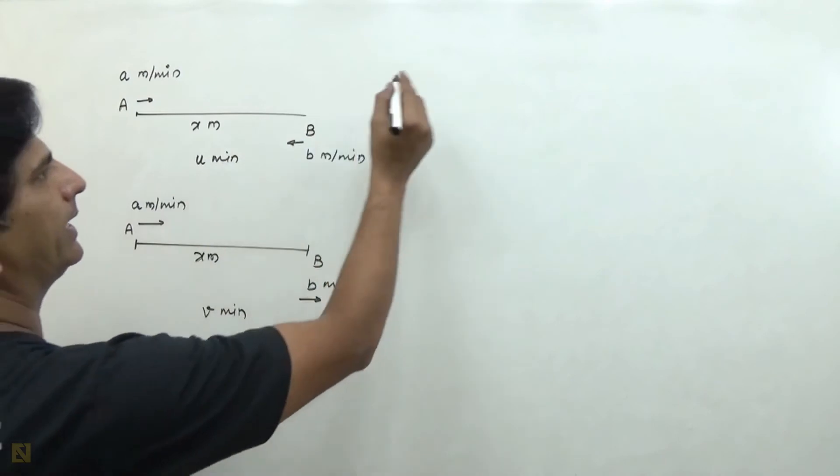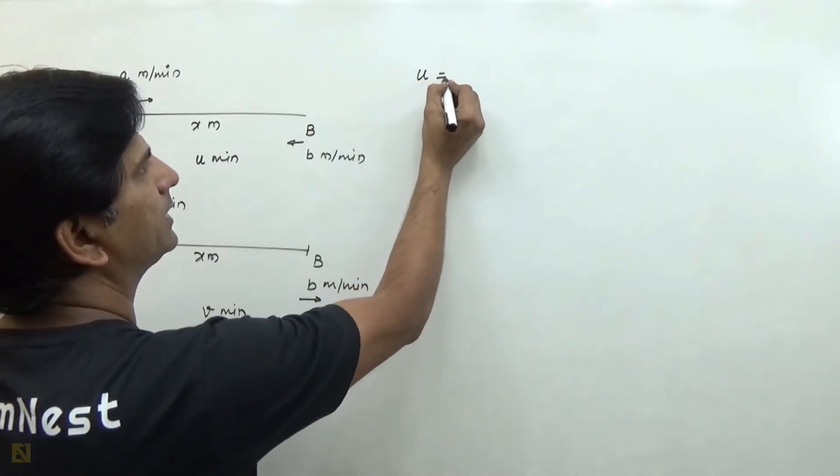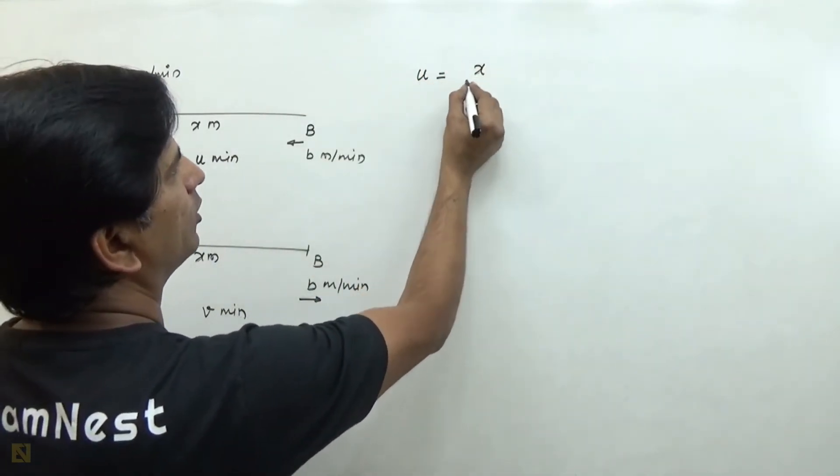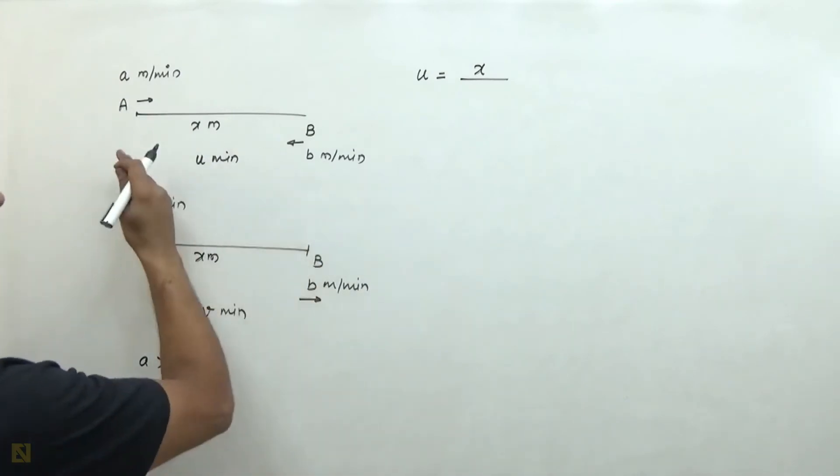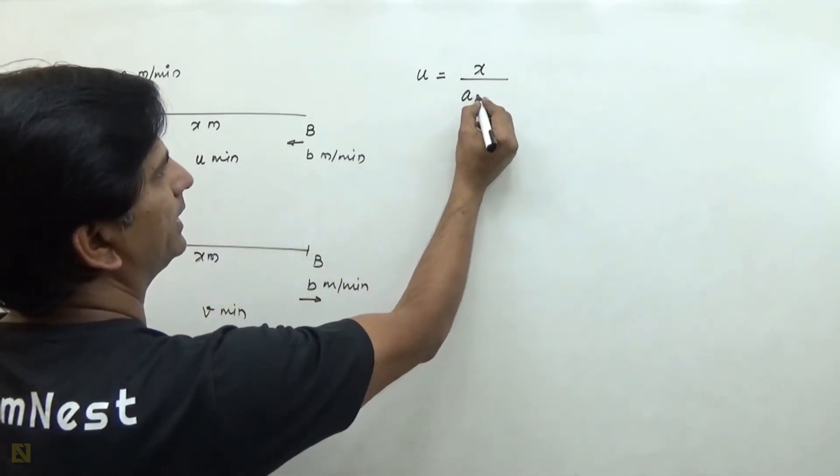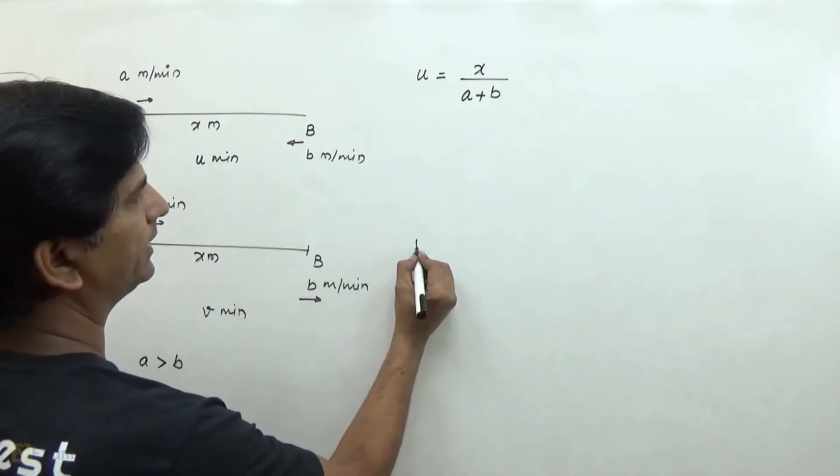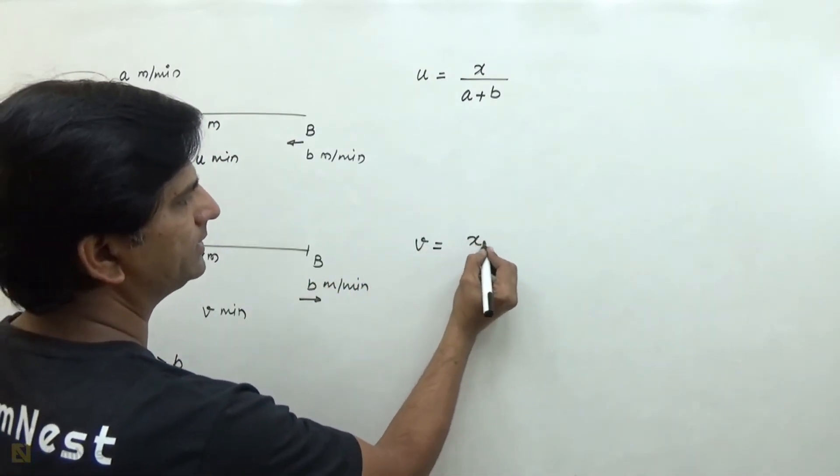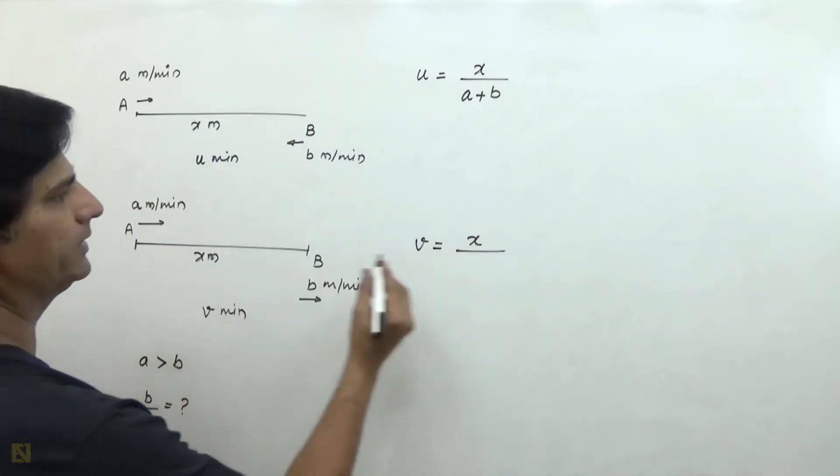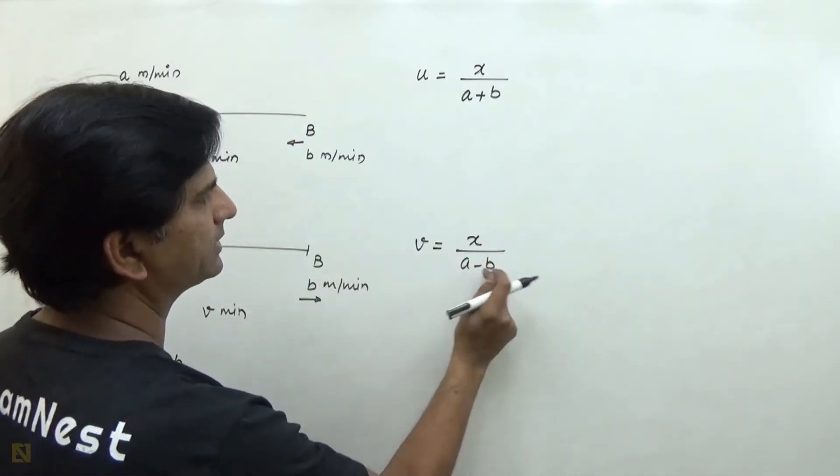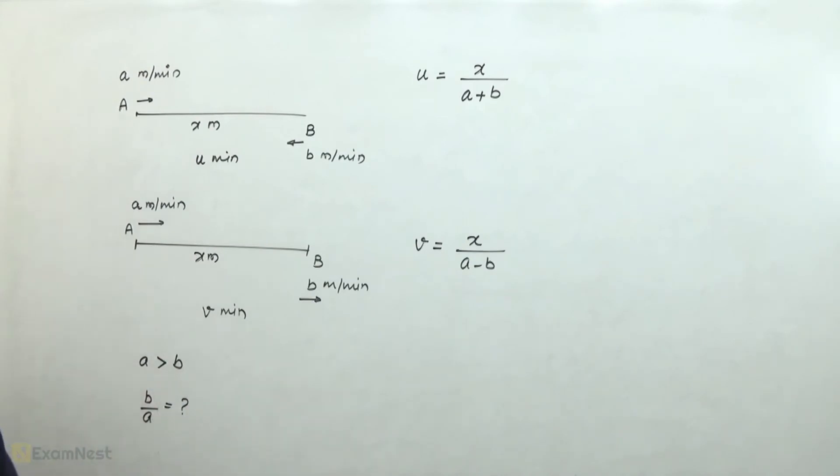Using the relative speed concept, time to pass each other is equal to distance over relative speed. This is a minus b, faster minus slower. They are moving in the same direction.